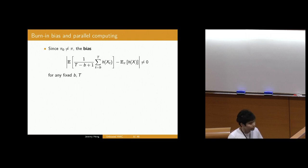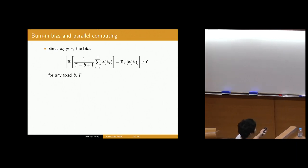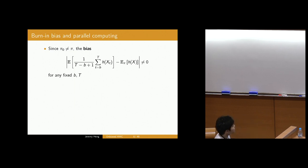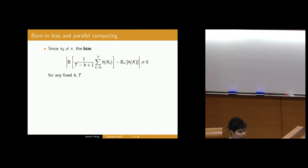What's important to note here is that if you look at the bias of the estimator — the expectation of my estimator less what you're trying to estimate — this thing is non-zero for any fixed B (burn-in) and number of samples capital T. You might think that in some cases this B might be sufficient and hence this bias might be very small, but this is something you typically would not know. What we do know is that if you fix B and send the number of samples to infinity, then the bias goes to zero.